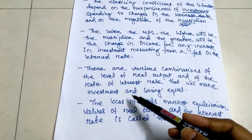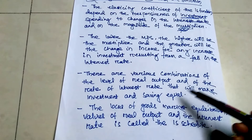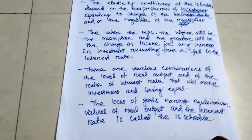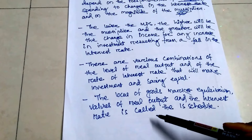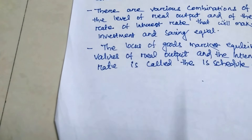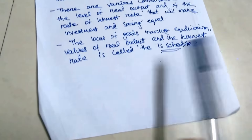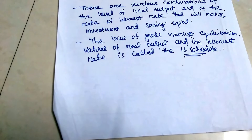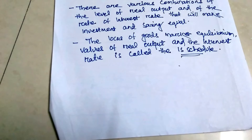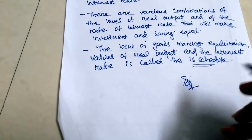There is a variable combination of levels of real output and rate of interest that will make investment equal to saving (I equals S). The locus of these goods market equilibrium values of real output and interest rate is called the IS schedule — the investment and saving schedule. This definition appeared in a paper 2 question around 2013.